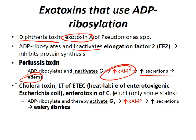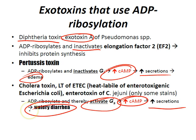The cholera toxin or the heat-labile toxin of enterotoxigenic E. coli (ETEC), or the enterotoxin of Campylobacter jejuni (only in some strains), those ADP ribosylate and therefore activate the Gs-coupled receptor, which does the same thing: increased cyclic AMP, which leads to increased secretions and watery diarrhea. That's how ADP ribosylation works.